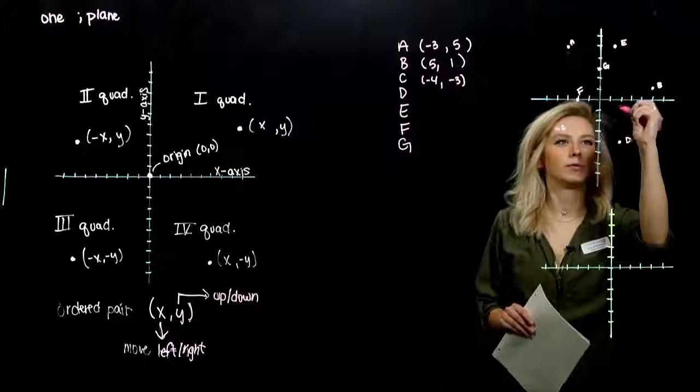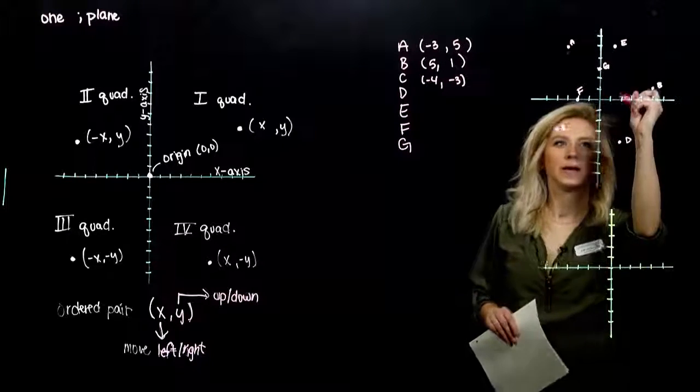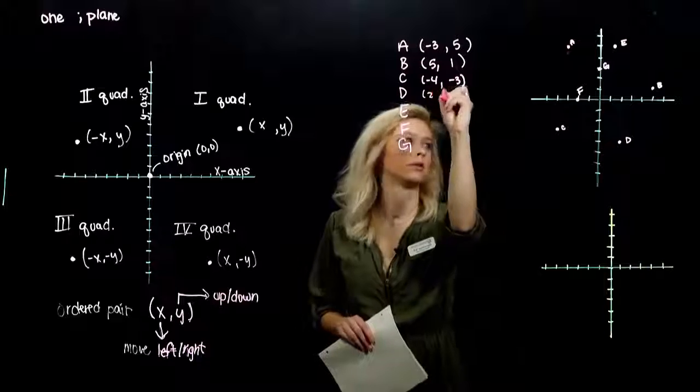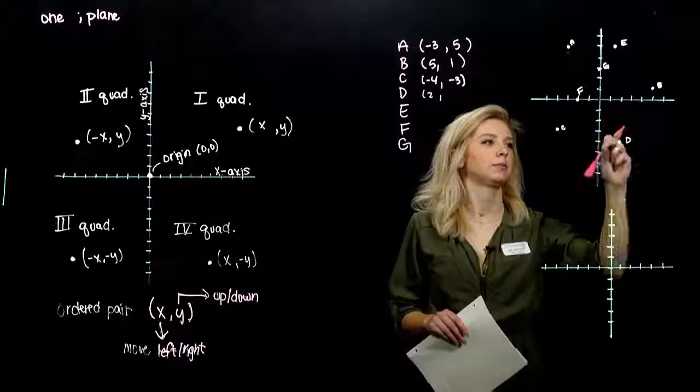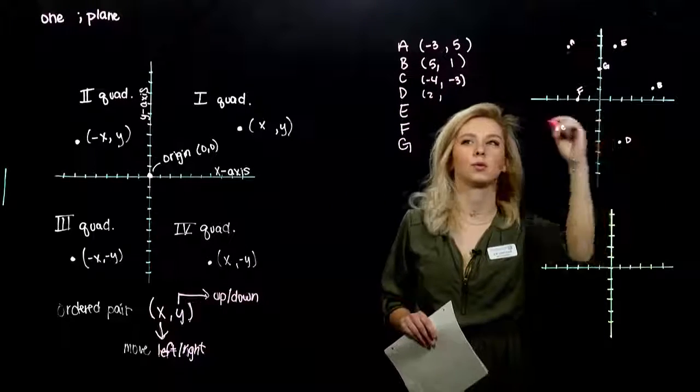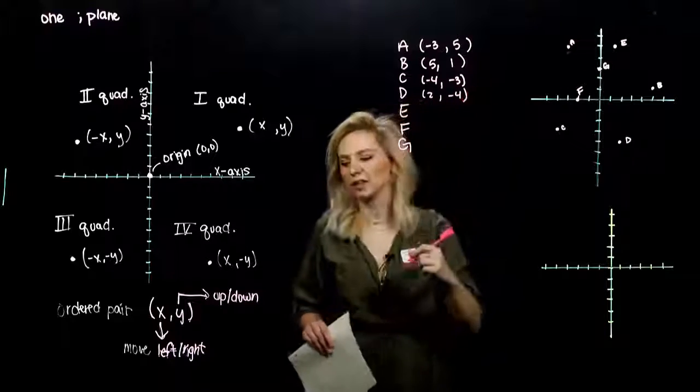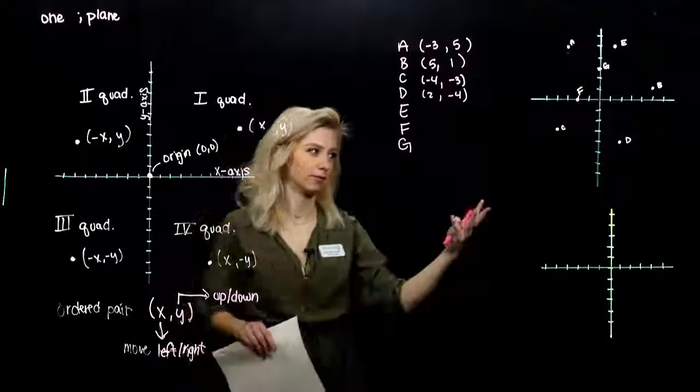D is in the fourth quadrant. So I've gone over positive two. And down one, two, three, four. So again, positive, negative fits.